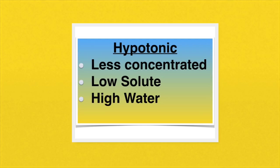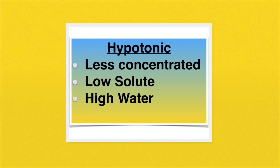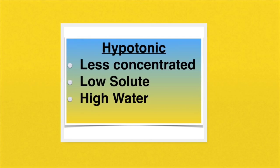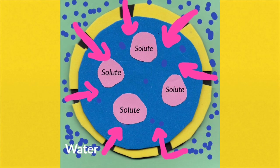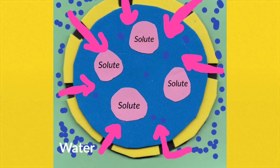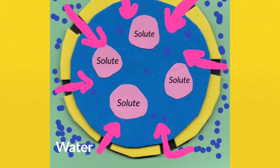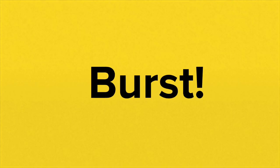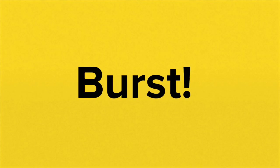Bathing your cells in a hypotonic solution, or a less concentrated solution, means that there would be high water content. Water will move from where there's a lot of it, the hypotonic solution, to where there's less of it, inside those cells, by means of osmosis. The cells will eventually burst as a result of taking in so much water.